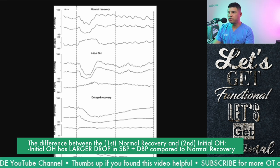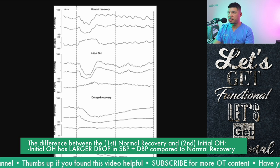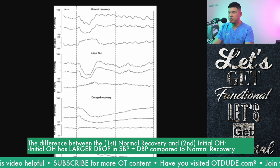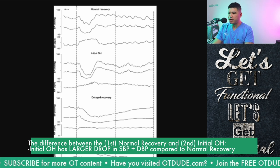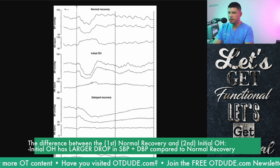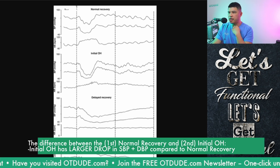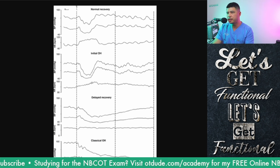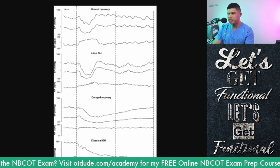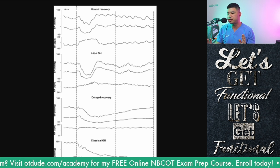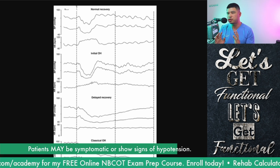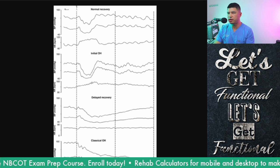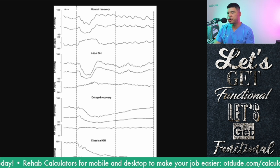The second graph depicts initial orthostatic hypotension — within the 30-second window there is that drop. This example is a 14-year-old healthy male, and it shows the drop characteristic of initial orthostatic hypotension. Delayed recovery, shown in the third graph, is basically a longer stretch of time for the patient to recover back to baseline after their positional change — the same drop in systolic and diastolic blood pressure occurs, but it takes longer to return to baseline.